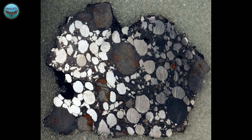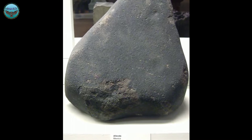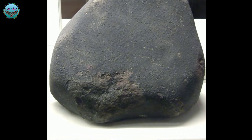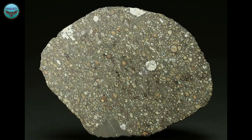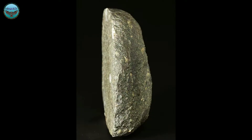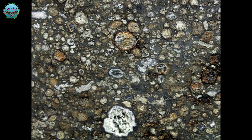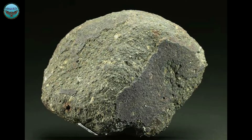Carbonaceous chondrites were not exposed to higher temperatures, so they are hardly changed by thermal processes. Some carbonaceous chondrites, such as the Allende meteorite, contain calcium-aluminum-rich inclusions, or CAIs. These are compounds that emerged early from the primeval solar nebula, condensed out, and represent the oldest minerals formed in the solar system.